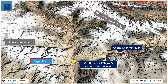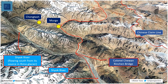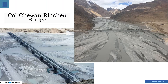En route, we first come across the confluence of the Changchenmo river with the Shayok river. After travelling some distance upstream, comes the confluence of the Galwan river with the Shayok river. The road continues upstream along the Shayok river until a point from where it crosses over to the right bank through the recently inaugurated Colonel Shevang Rinchen bridge and enters a gorge which leads to Margo. This is the Colonel Shevang Rinchen bridge.